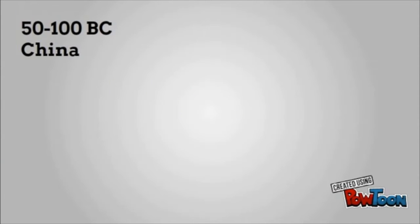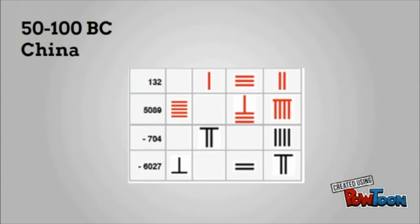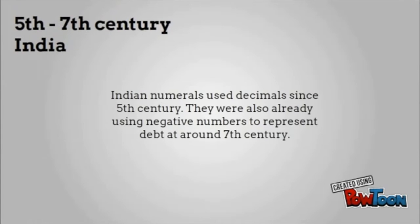The concept of negative numbers already existed in China at this time. They were represented by different colored lines. Indian numerals used decimals since 5th century. They were also already using negative numbers to represent debt at around 7th century.